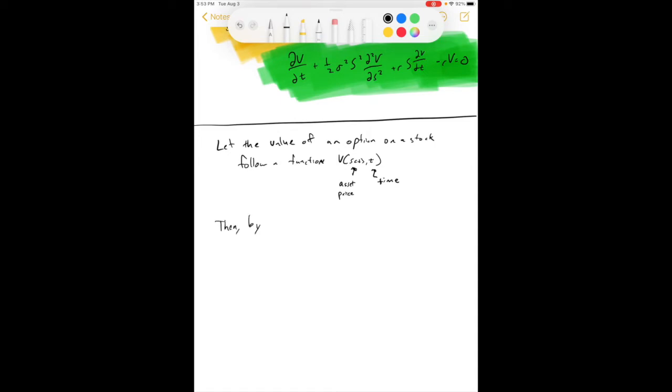Okay, where s of t here is the asset price, and this t over here is time. So, then, by Ito's lemma, we've got that dv equals the partial of v with respect to t, dt, plus the partial of v with respect to s, ds, plus one-half, this is b of s of t and t, squared, times the second derivative of v with respect to s, dt.